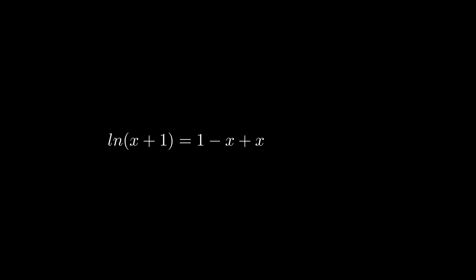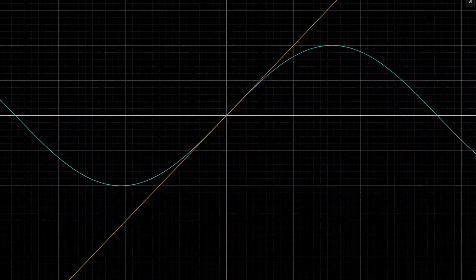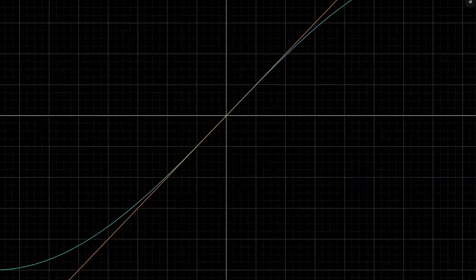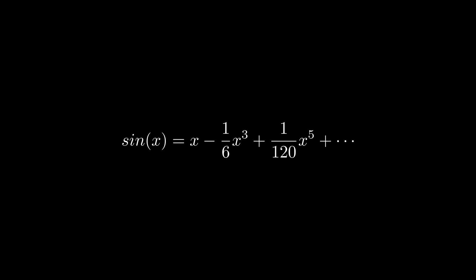Taylor series, sometimes also called the Maclaurin series. If you don't know what it is, it's essentially a way of approximating function values by recreating the function as a series of polynomials. An example is estimating sine of x as x. You've probably seen the memes, but it is actually an entirely legitimate way of estimating sine of x. Of course we could make this a more accurate estimation by increasing the series.